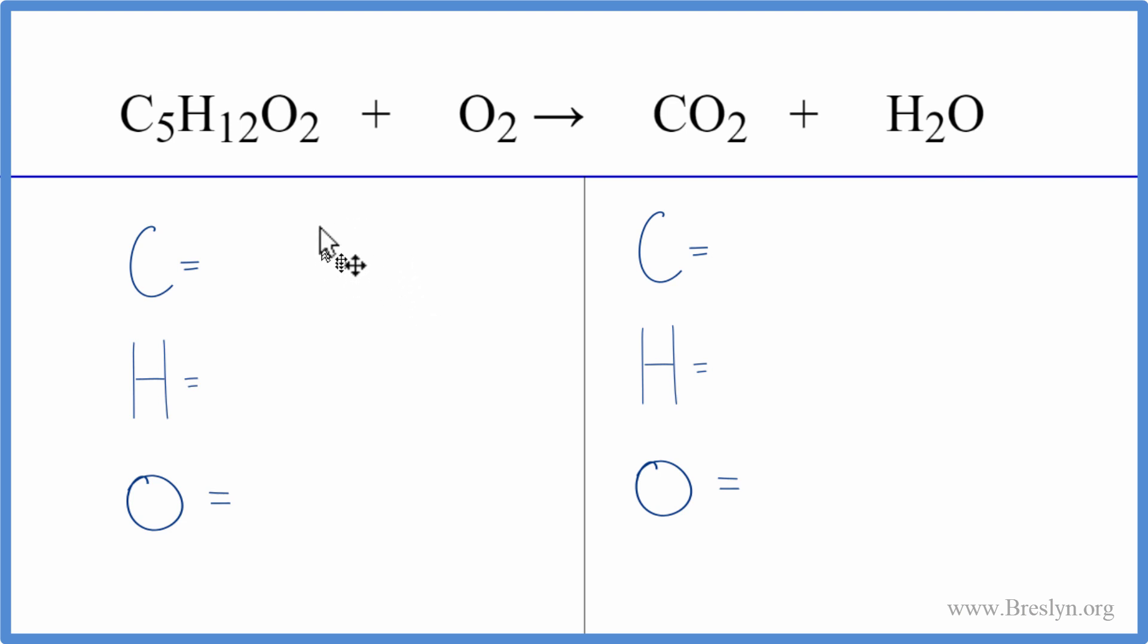We'll count the atoms up on each side of the equation. We have five carbons, 12 hydrogens, and two oxygens plus these two oxygens right here. Do not forget those. On the product side we have one carbon, two hydrogens, two oxygens, plus one oxygen right here. So we have three oxygens. Let's leave the oxygens till last.